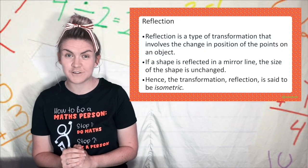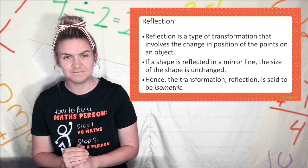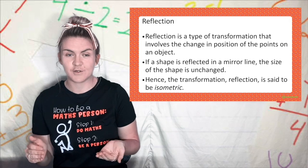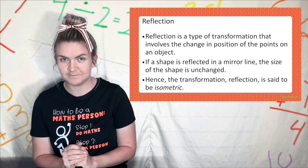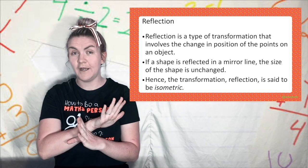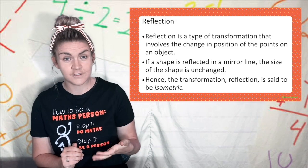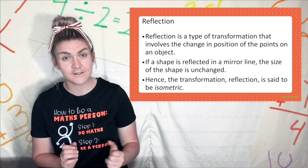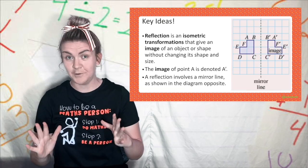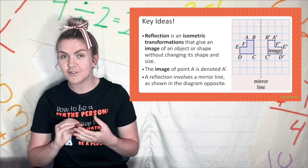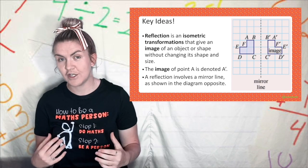In the past you may have talked about flipping a shape, now we're going to use the more formal term reflection. A reflection is a type of transformation and it involves changing the position of the points in an object. When a shape is reflected over a mirror line the size of the shape does not change. Hence this transformation, reflections are also isometric meaning their dimensions stay the same. So a reflection is an isometric transformation that gives an image of an object or shape without changing its size.